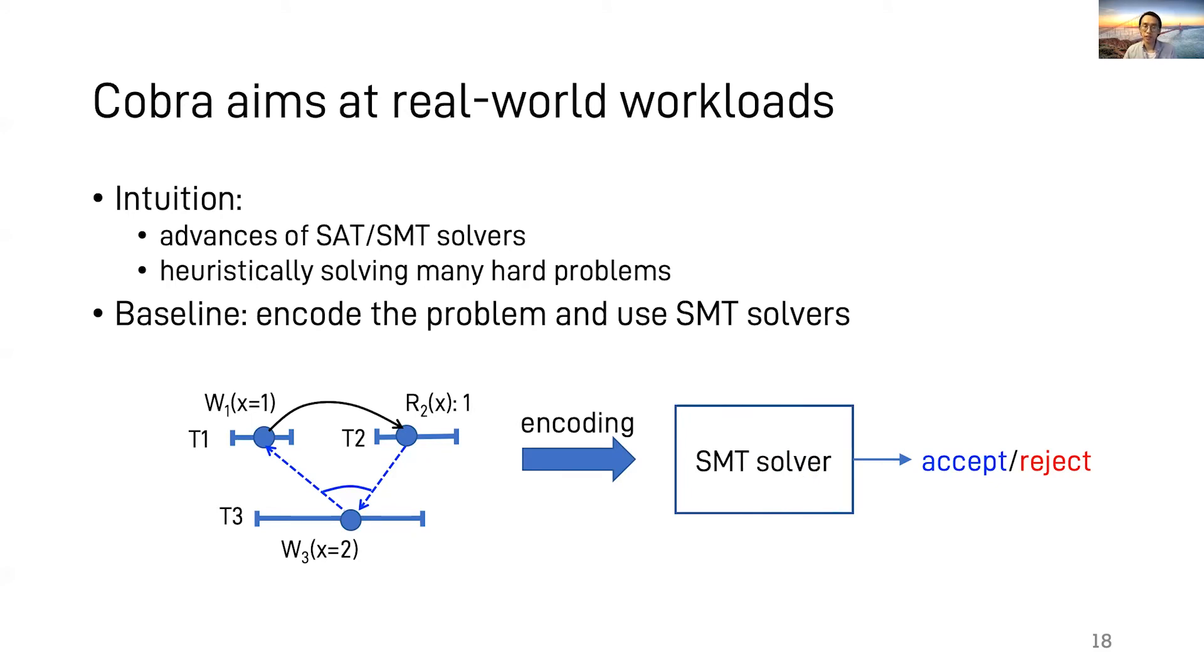If the solver's answer is satisfiable, meaning accept, then we know there exists some variable assignments such that there is an acyclic graph. Therefore, the history is serializable. Otherwise, the history is not serializable. This approach works for small workloads.